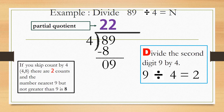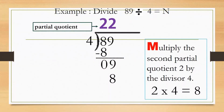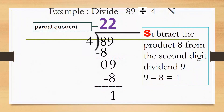Hint: if you skip count by 4, there are 2 counts and the number nearest 9 but not greater than 9 is 8. Next step is M — multiply the second partial quotient 2 by the divisor 4. 2 times 4 equals 8. S — subtract the product 8 from the second digit dividend 9. 9 minus 8 equals 1.